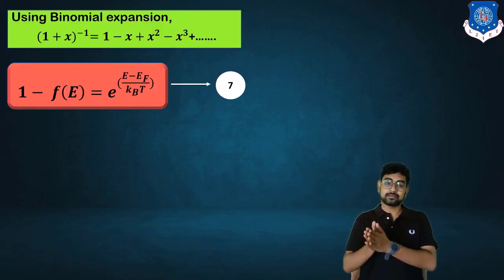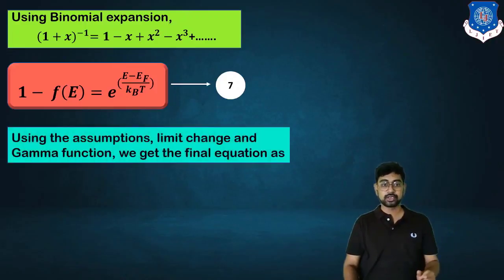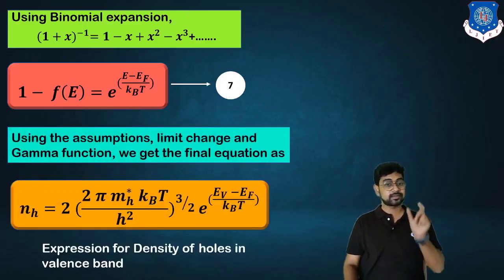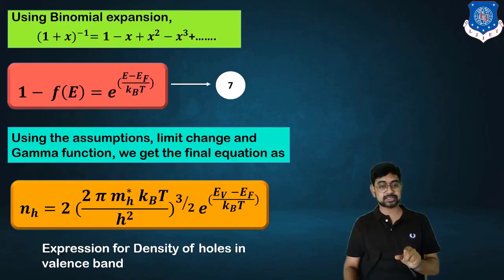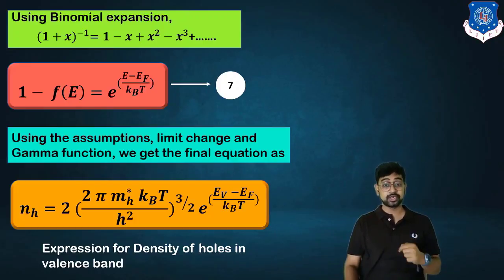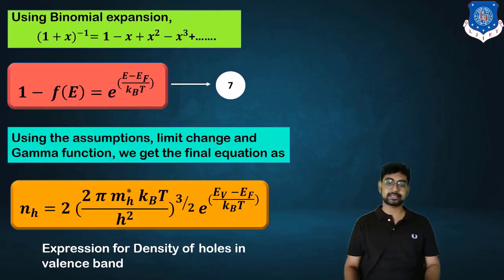Following the same steps — substituting the probability function, changing the limits, and applying the gamma function — we get the final expression for hole density: n_H = 2·(2πm*_H·k_BT/h²)^(3/2)·e^((E_V−E_F)/k_BT). This is the expression for the density of holes in the valence band.